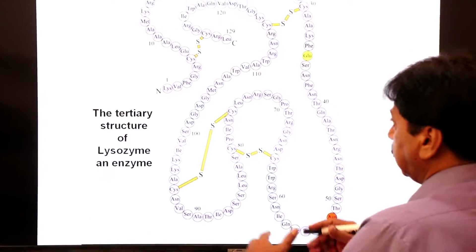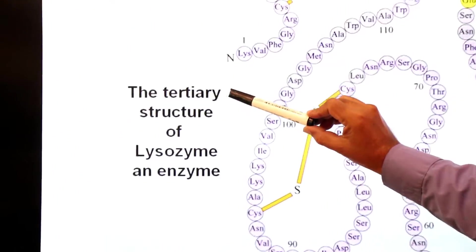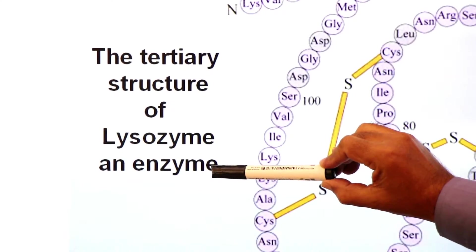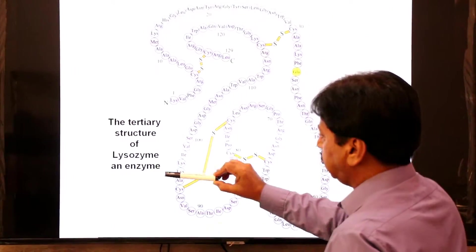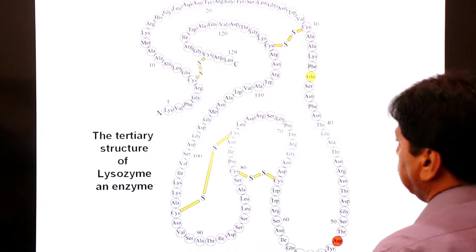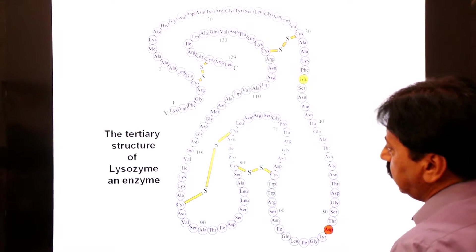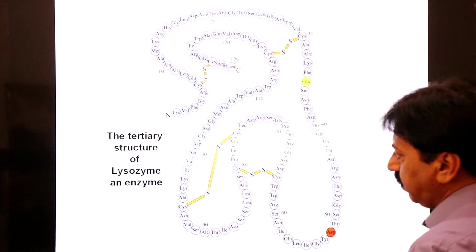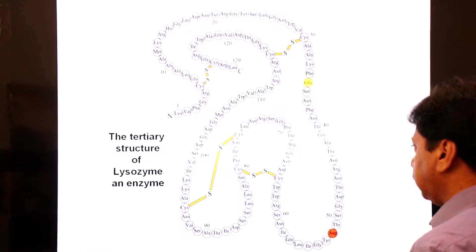This is an example of tertiary structure of protein — the tertiary structure of lysozyme, an enzyme and antibacterial enzyme present in tears and saliva. This three-dimensional tertiary structure shown is for lysozyme, an antibacterial enzyme.